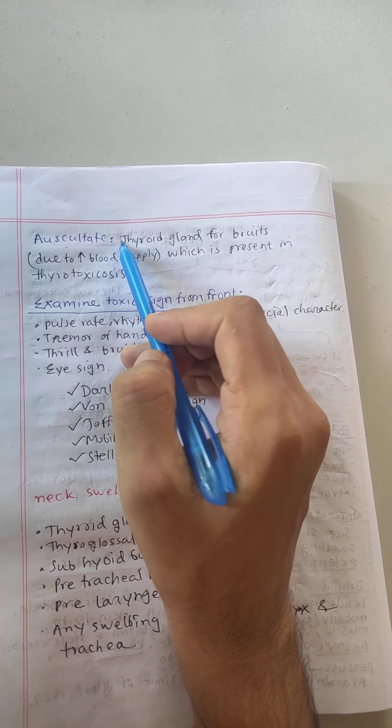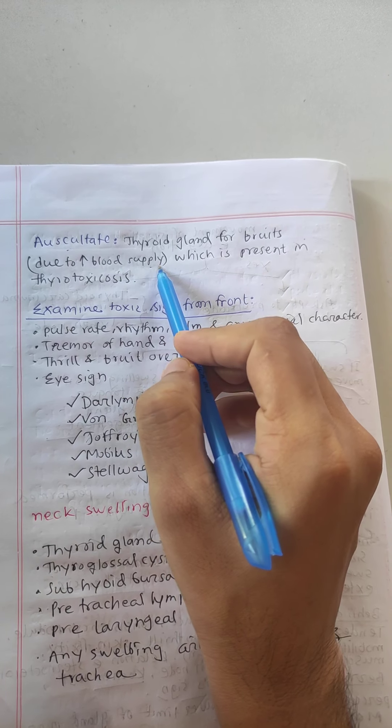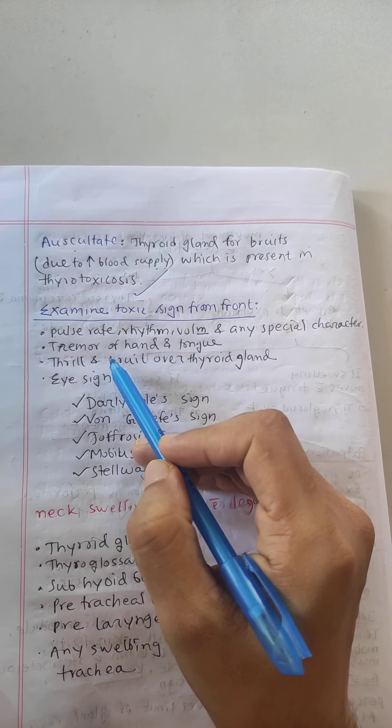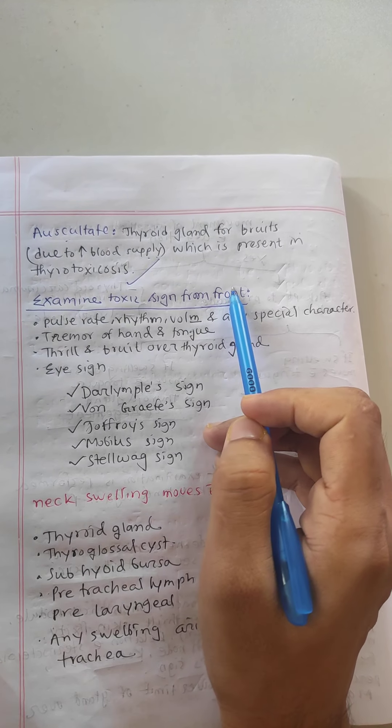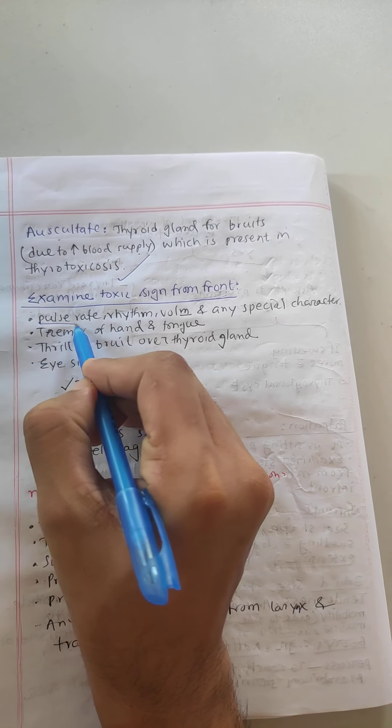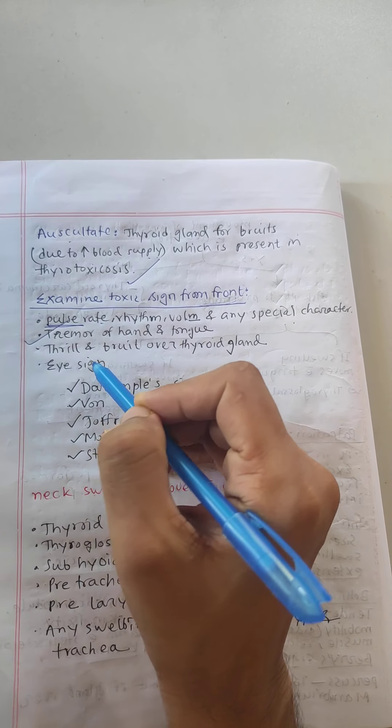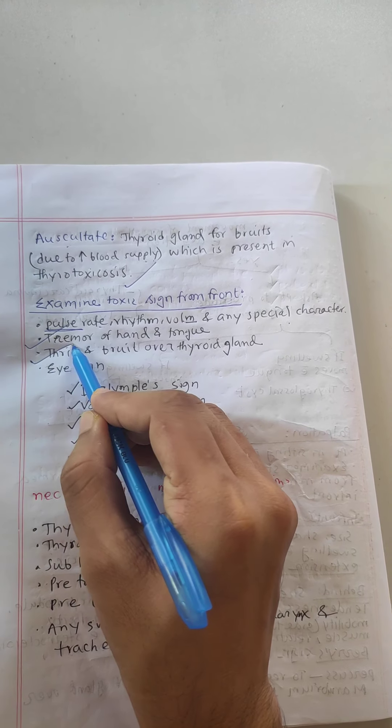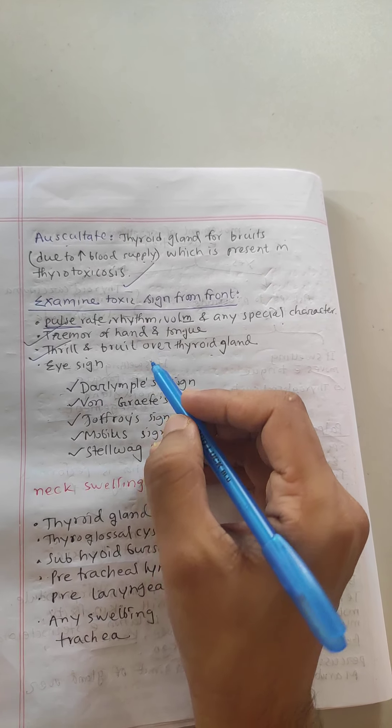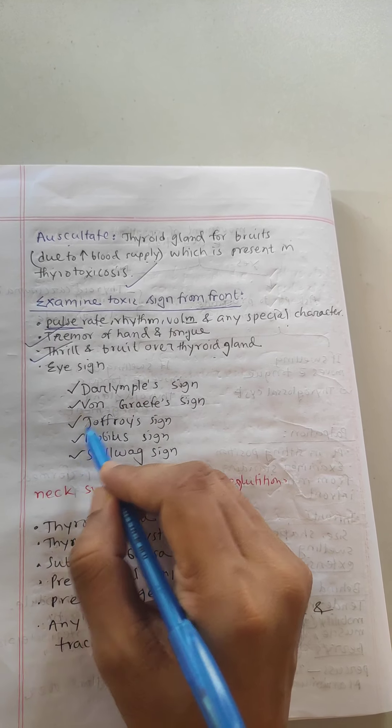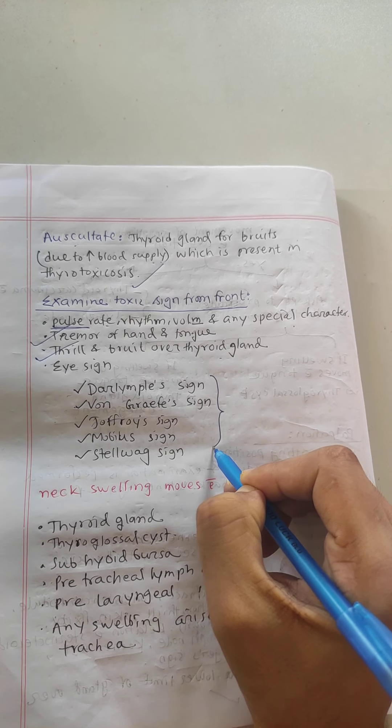Last of all, auscultation of the thyroid gland for bruit due to increased blood supply which is present in thyrotoxicosis. Then examine the toxic signs from in front - pulse rate, rhythm, volume, any special character, tremors of the hand and tongue, thrill and bruit over the thyroid gland. Then eye signs - Dalrymple sign, Von Graefe's sign, Joffroy's sign, Mobius sign, and Stellwag's sign.